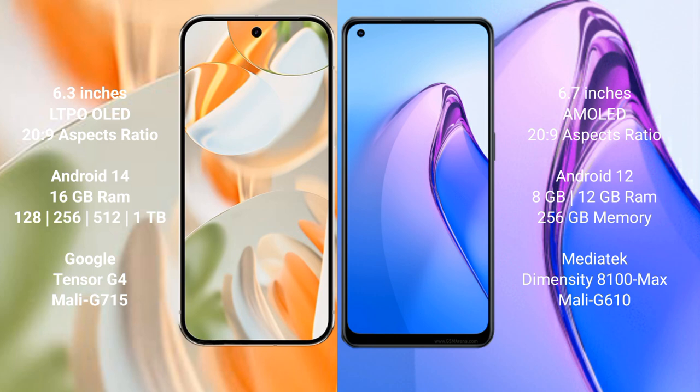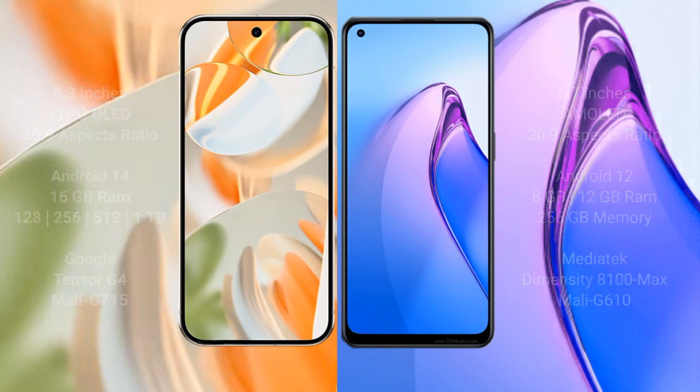Google Pixel 9 Pro comes with 16GB RAM, 128GB, 256GB, 512GB, and 1TB internal storage options, with the Google Tensor G4 processor and GPU Mali-G715. Oppo Reno 8 Pro comes with 8GB and 12GB RAM, and 256GB internal storage, with the MediaTek Dimensity 8100 Max processor and GPU Mali-G610.